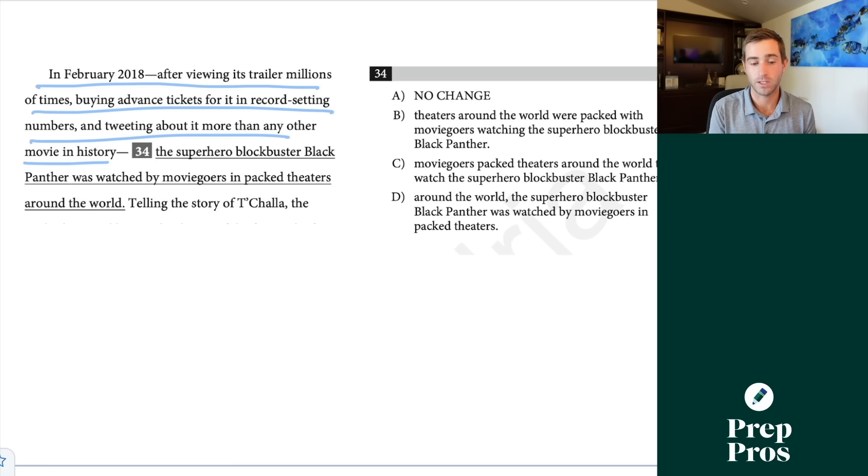So in February 2018 after viewing its trailer millions of times, buying advanced tickets for it in record-setting numbers, and tweeting about it more than any other movie in history, well this modifier has to be describing what comes after it or it's misplaced. So here the superhero blockbuster cannot be viewing, buying, and tweeting about something. So what we're looking for in our answer choices is what follows to be described by this modifier. And only moviegoers could be doing that. That's how we can find our correct answer of c.